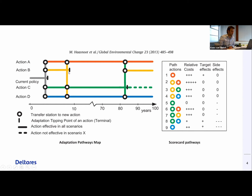If you take the yellow action, it will no longer hold than nine years, for example. Those terminal stations are also called adaptation tipping points. Of course, you can transfer from one action to another, and these are indicated by the circles. You might wish to give your actions different colors depending on how effective they are in certain scenarios.